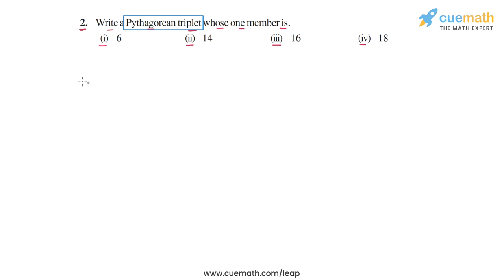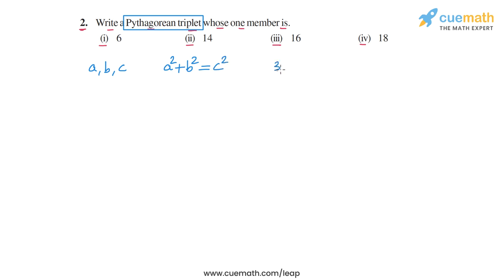A Pythagorean triplet is any triplet of numbers A, B, and C which satisfies the Pythagoras theorem — meaning the sum of the squares of two of those numbers, A² + B², is equal to the square of the third number, C². For example, if you take the triplet 3, 4, and 5, this is a Pythagorean triplet because 3² + 4² = 5².